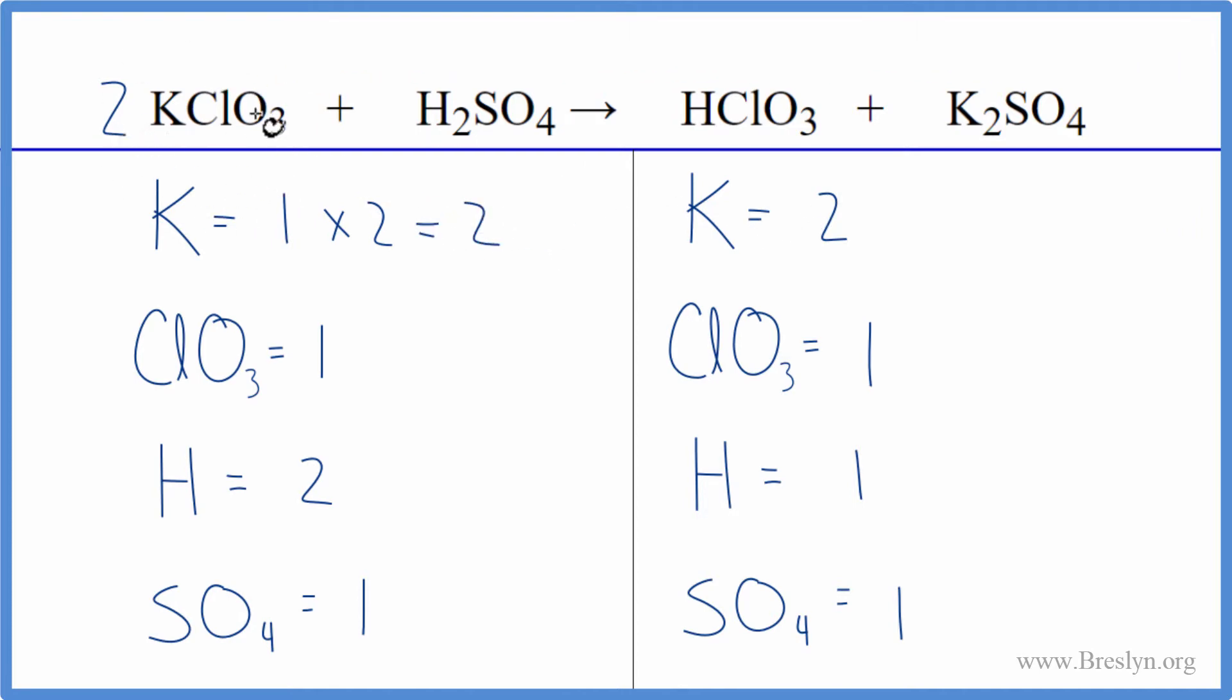This two applies to everything. And we said we had one chlorate times the two. That'll give us two. So on the product side, we'll put a two in front of the HClO3. That way, we have one times two for the hydrogen, and the hydrogens are balanced, and then we have one chlorate times the two. That gives us two chlorates.